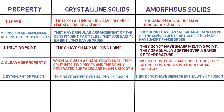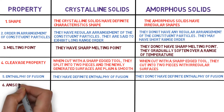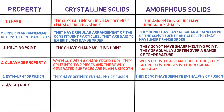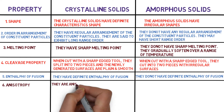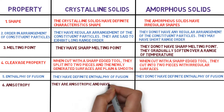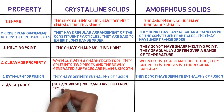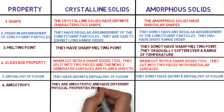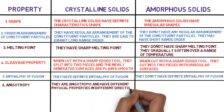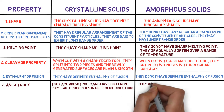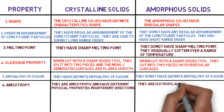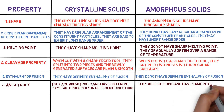The sixth property is anisotropy. Crystalline solids are anisotropic and have different physical properties in different directions, whereas amorphous solids are isotropic and have the same physical properties in all directions.